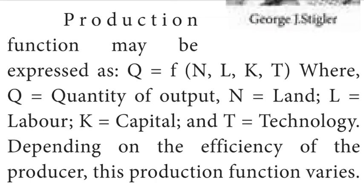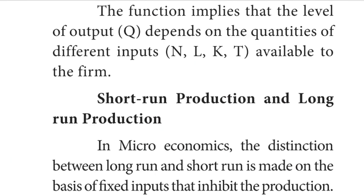Production function may be expressed as Q = f(N, L, K, T), where Q is quantity of output, N is land, L is labor, K is capital and T is technology. Depending on the efficiency of the producer, this production function varies. The function implies that the level of output Q depends on the quantities of different inputs N, K, L, T available to the firm.